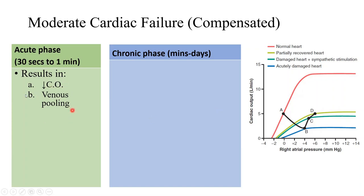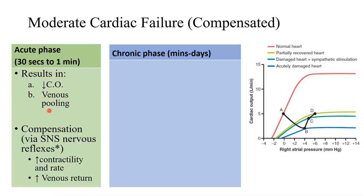Now the acute phase manifests as decreased cardiac output and venous congestion. Compensation happens through sympathetic nervous system reflexes — the baroreceptor reflex, CNS ischemic response, and chemoreceptor reflex, all of which come into play because decreased cardiac output leads to decreased blood pressure. Remember: blood pressure equals cardiac output times total peripheral resistance. Decreasing cardiac output decreases blood pressure, which signals the sympathetic nervous system through baroreceptors to increase contractility and heart rate, and also increases venous return by squeezing the capacitance vessels.